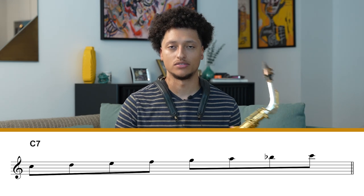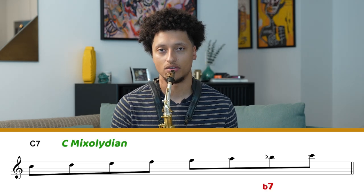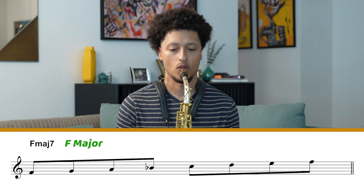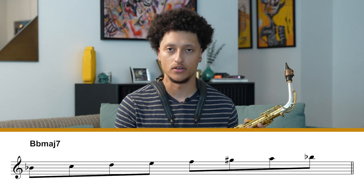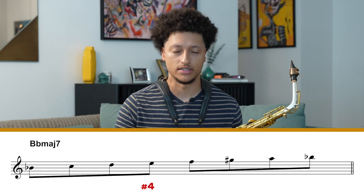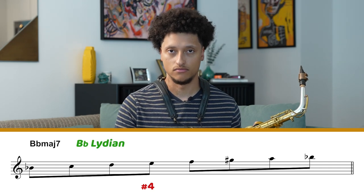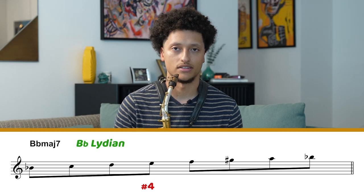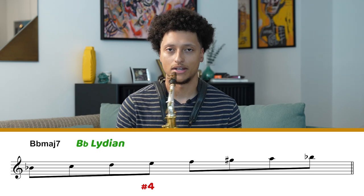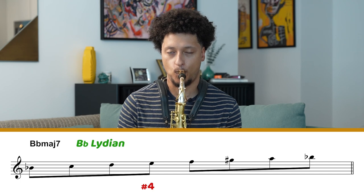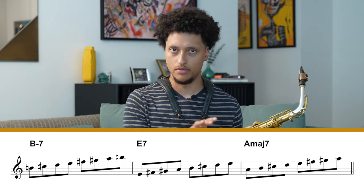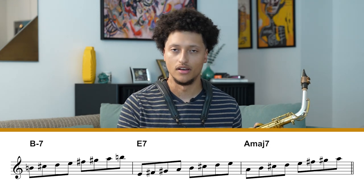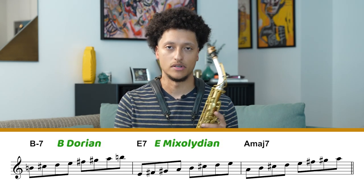The next chord is our five chord, so we play the Mixolydian — everything the same as major but with a flat seven. Then we get our one chord, F major Ionian. The four chord is also a major seventh, but now it has a raised fourth, giving us B flat Lydian: one, two, three, sharp four, five, six, seven. Because this is part of the F major family, we play E natural instead of E flat. The next chord goes up a half step from B flat to B minor seven, putting us in the A major family — Dorian, Mixolydian, and then major for the two-five-one.